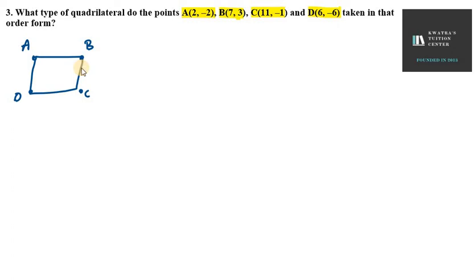Hello everyone, let's start with question number three. What type of quadrilateral do the points A(2,-2), B(7,3), C(11,-1), and D(6,-6) taken in that order form? We need to know which type of quadrilateral it is - parallelogram, square, rhombus, or kite. We need to study it.